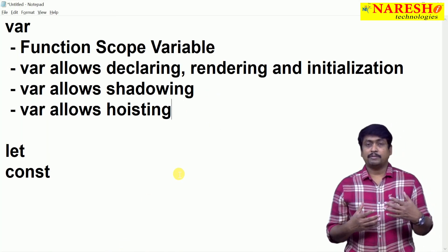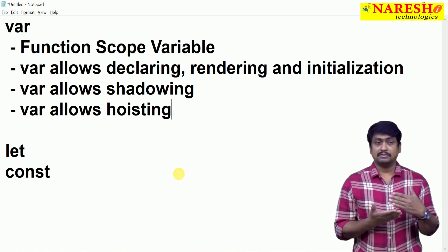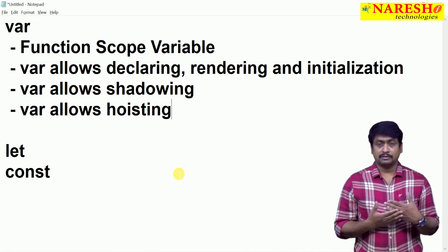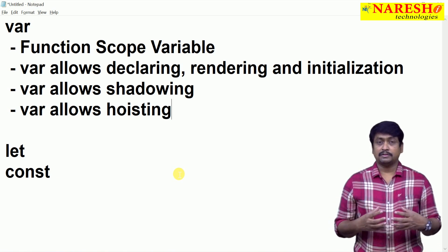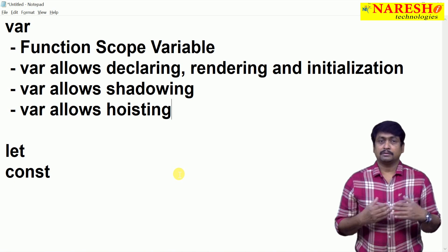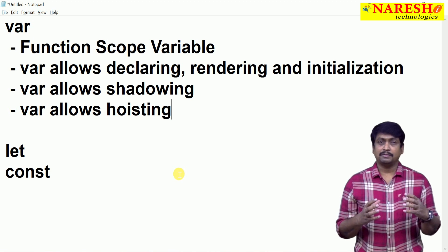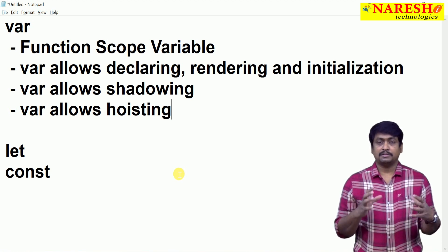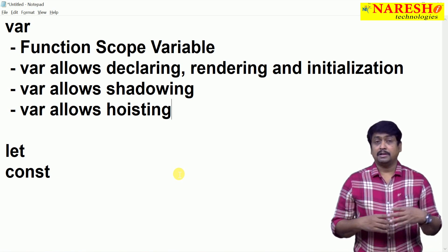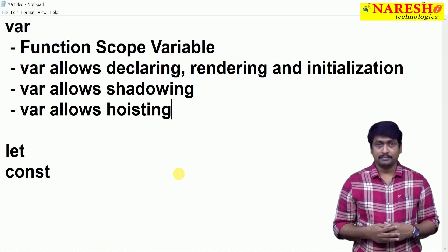So what are the key points about var? Var defines a function-scope variable. Var allows declaring, rendering, and initializing. Var allows shadowing — same name identifier redeclared within the scope. And var allows the concept of hoisting — you can define a variable anywhere and utilize it before it is declared; the compiler first processes the declaration, then handles rendering and initialization. This is the concept of var. In our next session we will discuss what let and const are and the differences between them. Thank you.